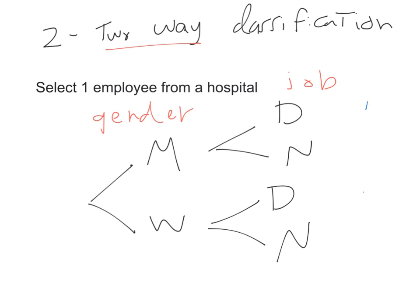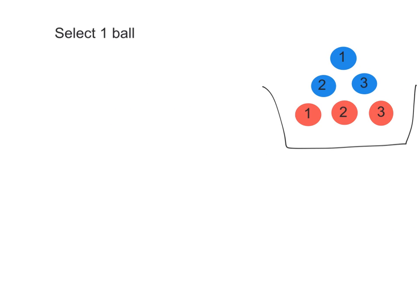At the end, what we can get is: a male doctor, a male nurse, a female doctor, or a female nurse. So we have four possibilities for this one person that is selected. That's an example of a two-way classification that also builds a two-stage tree diagram.